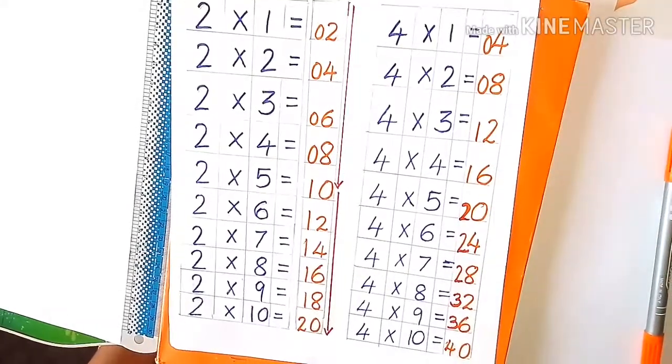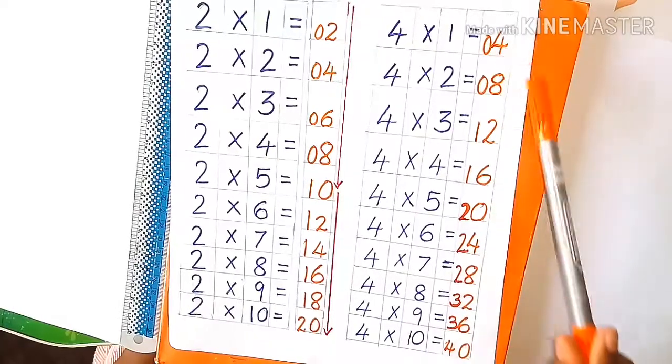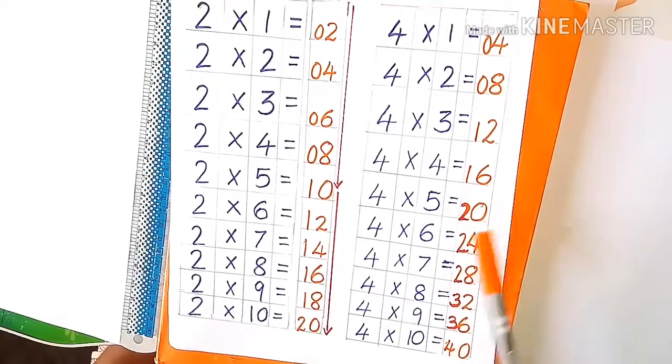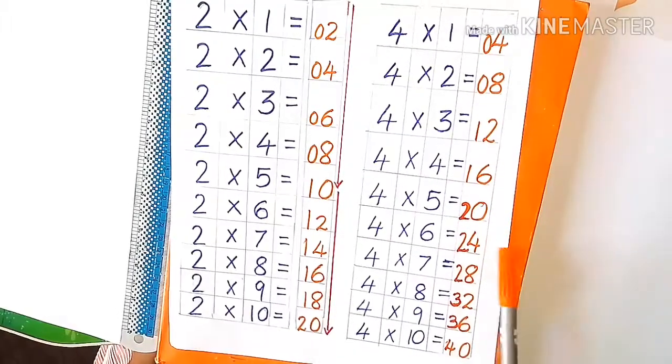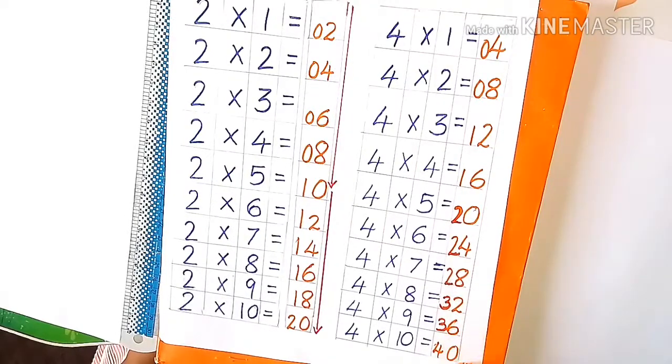So the method is 4 8 2 6 0, then again 4 8 2 6 0.